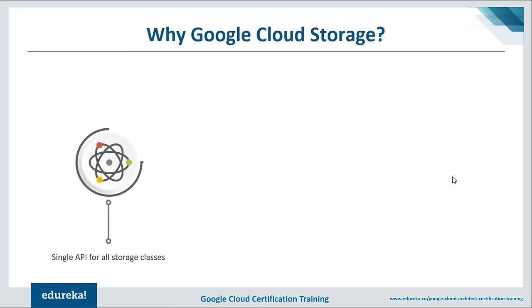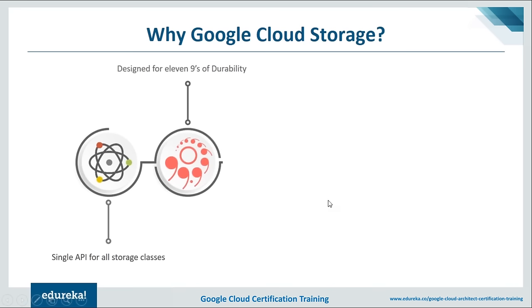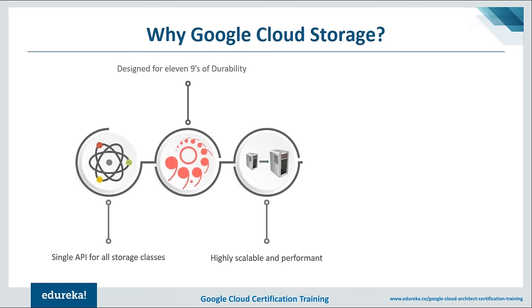Let's understand why we need Google Cloud Storage. First of all, it has a single API for all storage classes. The cloud storage consistent API latency and speed across storage classes simplifies development integration and reduces code complexity. You can set custom policies to transition data seamlessly from one storage class to the next depending on your cost and availability needs. It is designed for 11 nines of durability — 99.999999999% annual durability — storing data redundantly with automatic checksum to ensure data integrity.